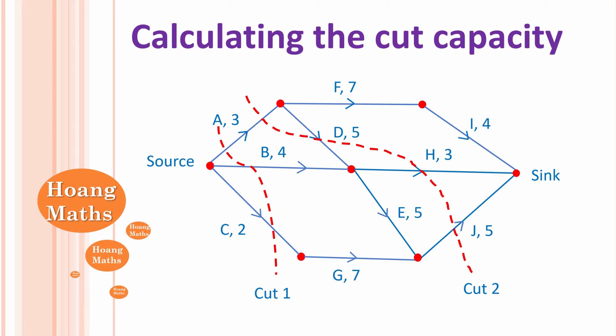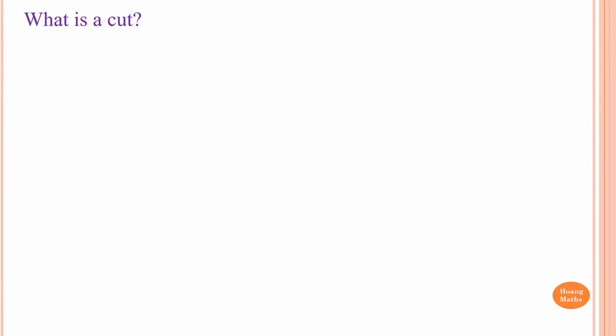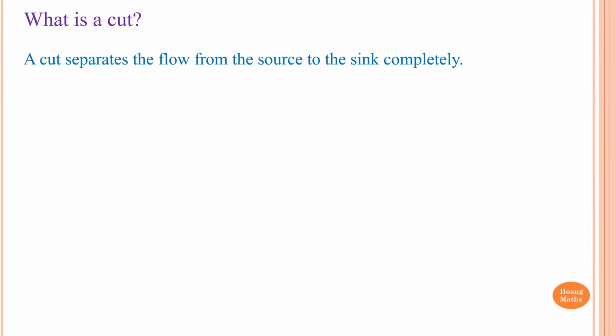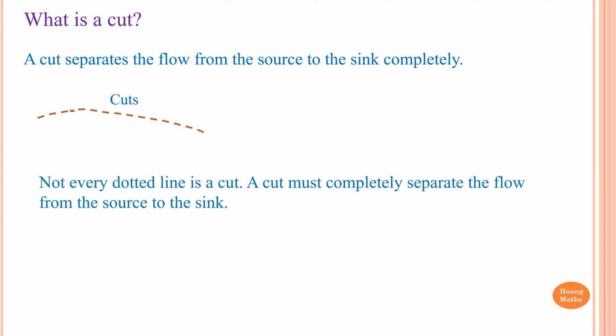If you can, please download or print out the PDF file in the description below so you can work with me. What is a cut? A cut separates the flow from the source to the sink completely. A dotted line represents a cut, but not every dotted line is a cut — a cut must completely separate the flow from the source to the sink. You will understand once I go through the examples.